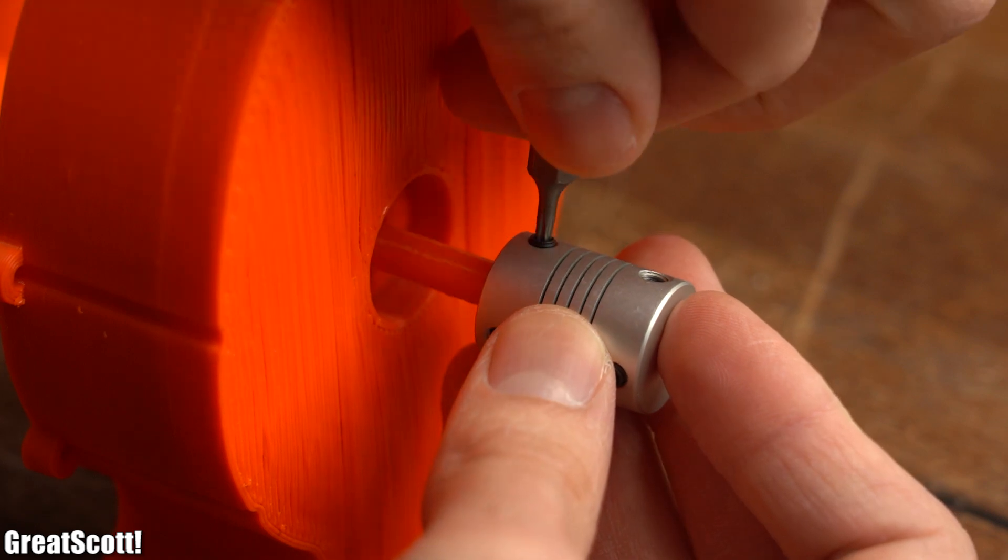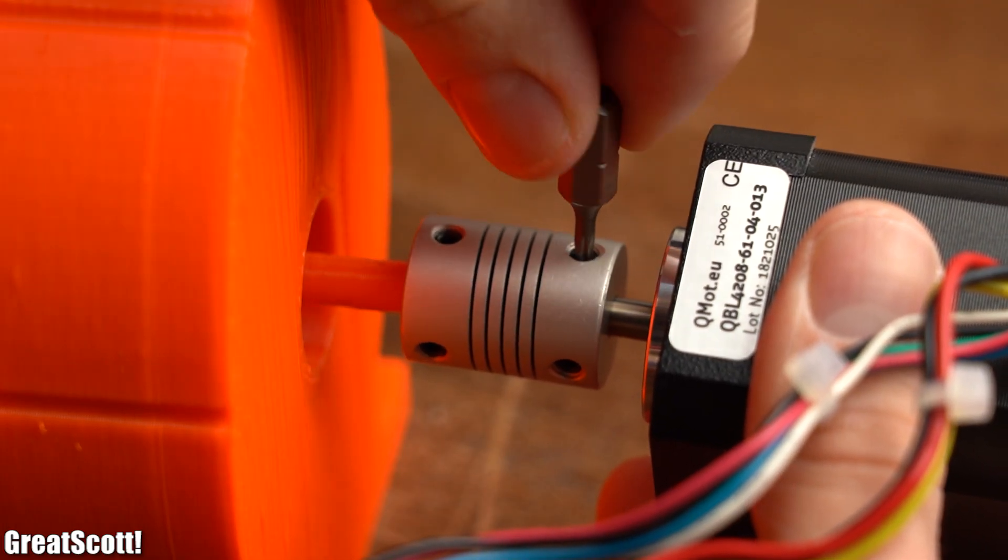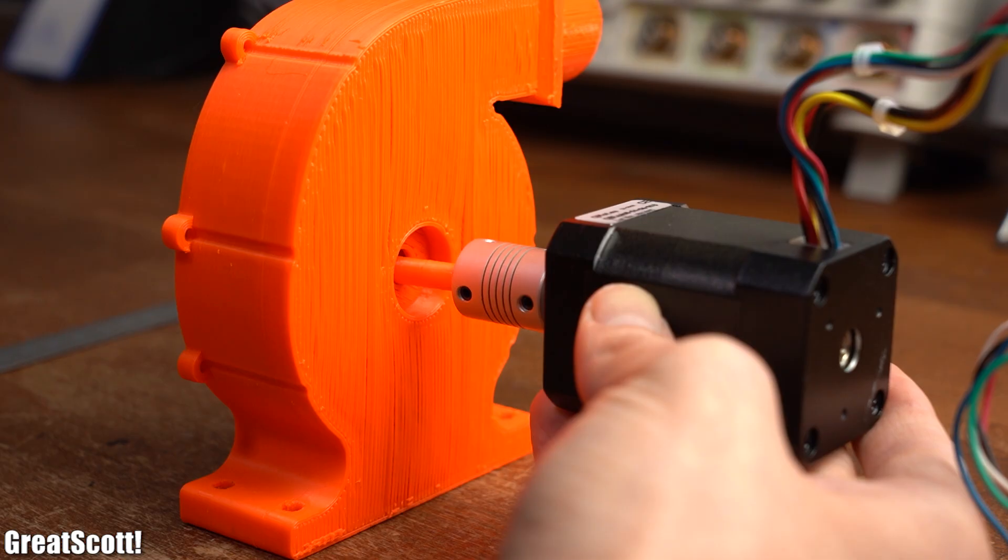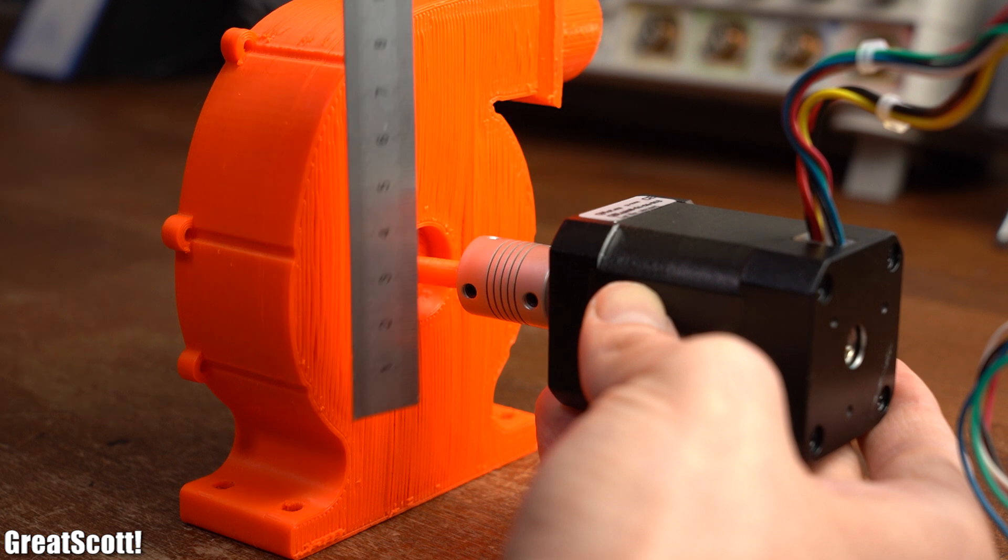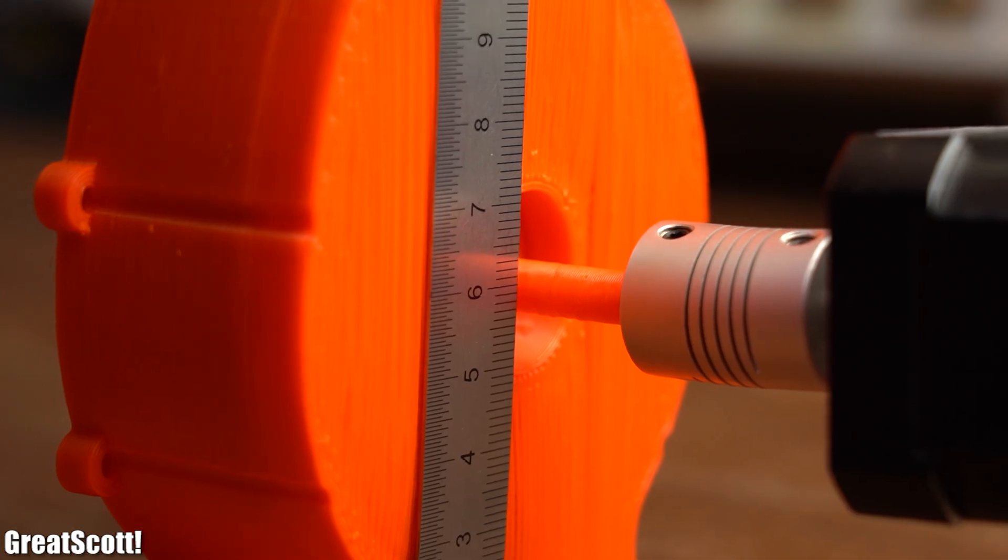So now we need to attach the motor in a way to constantly turn the wheel. For that I firstly added a motor shaft coupler to the wheel, which coincidentally also perfectly fits onto the motor shaft. So the only measurement I required was the height of the wheel shaft, which was around 6cm.